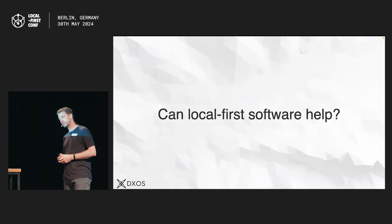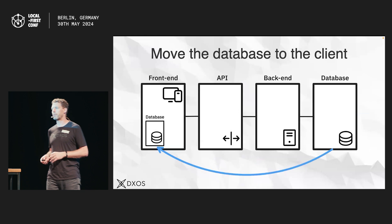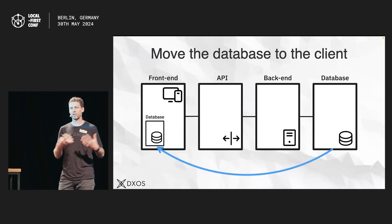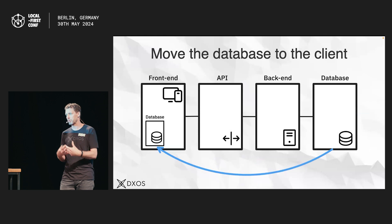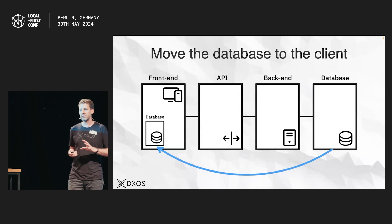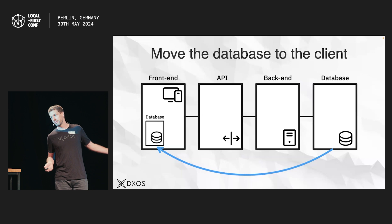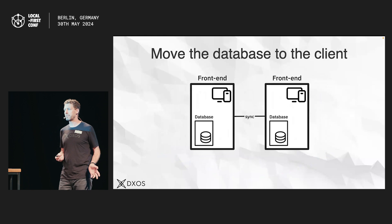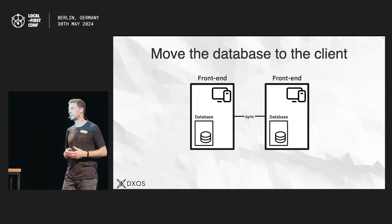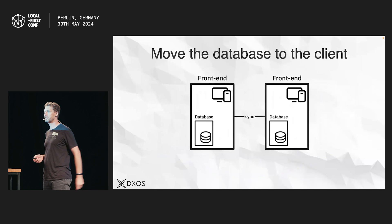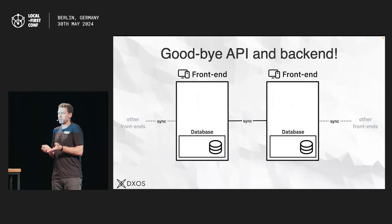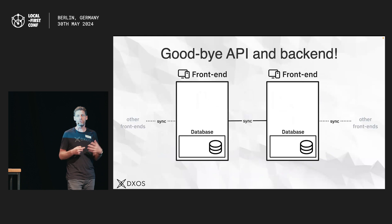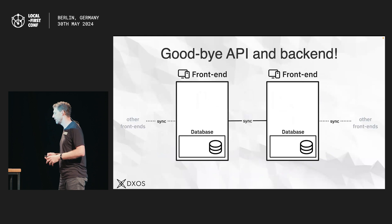Can local-first software help with that? Absolutely. Even though local-first software is a set of principles or ideals, we're seeing a similar architecture emerge across a lot of these frameworks. JAZZ, which we just talked about, has a very similar architecture to what DXOS is working on. You can basically summarize it as two things: move the database to the front-end, and then keep databases in sync by persisting mutations across the front-ends. That's the core of it — and when you do that, everything gets a lot simpler. The API and back-end concerns basically disappear and you end up with a flatter architecture.